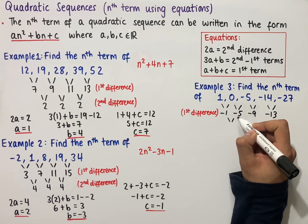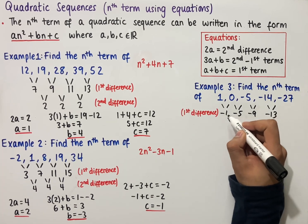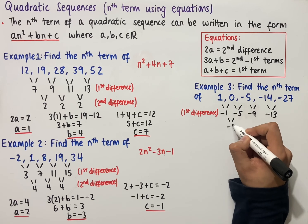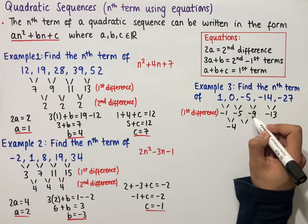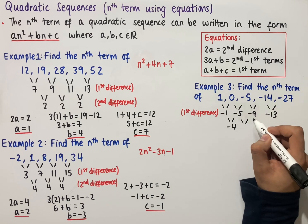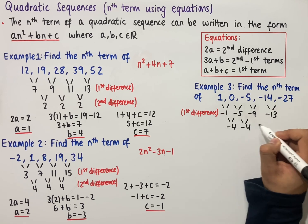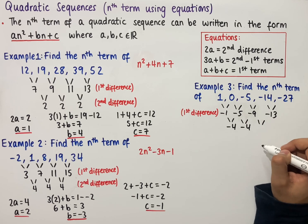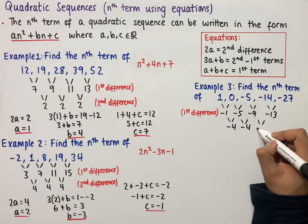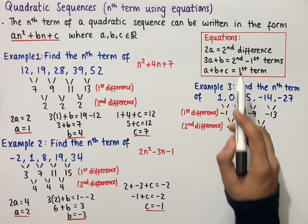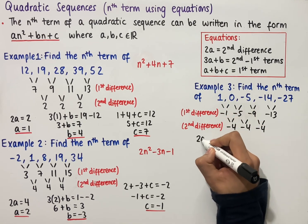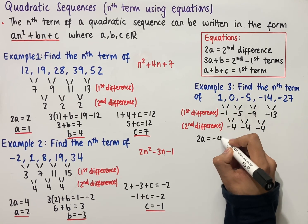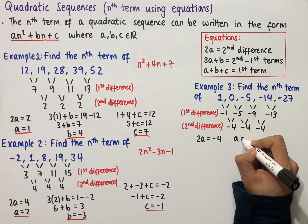Working out the second difference: minus 5 minus minus 1, which is minus 5 plus 1, which is minus 4; minus 9 minus minus 5, which is minus 9 plus 5, which is minus 4; and minus 13 minus minus 9, which is minus 13 plus 9, which is minus 4. Using the first equation, 2a equals the second difference, which is minus 4, so a equals minus 2.